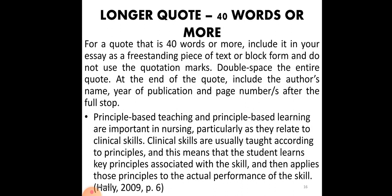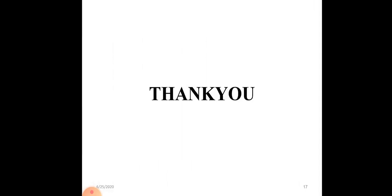Longer quotes are 40 words or more and should be given separately as a freestanding block of text. Do not use quotation marks. In APA 6th and 7th edition, double-space the entire quote. At the end of the quote, include the author's name, year of publication, and page numbers — but note that the full stop comes first, and then you give the citation details, for example 'Valle, 2009, p.60.' Thank you for watching.